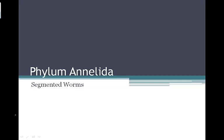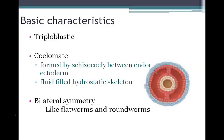Unit two, second video lecture: Phylum Annelida, the segmented worms. Segmented worms are triploblastic, meaning that they have three germ layers. They are coelomates, with their body cavity being formed between the endoderm and the ectoderm. While they don't have a skeleton structure, they still have a fluid-filled hydrostatic skeleton.